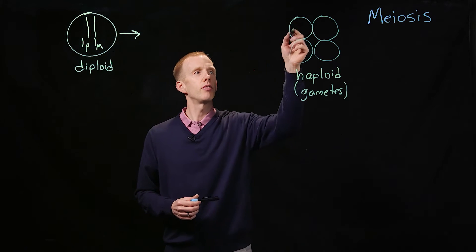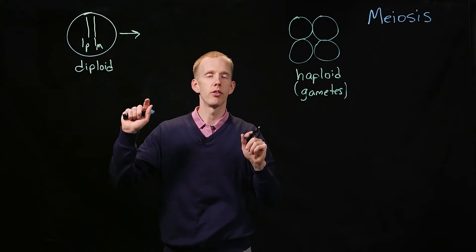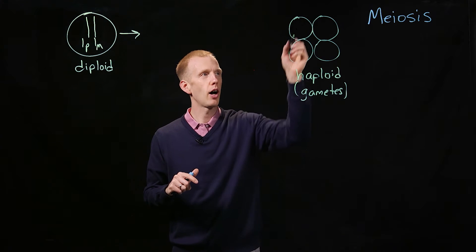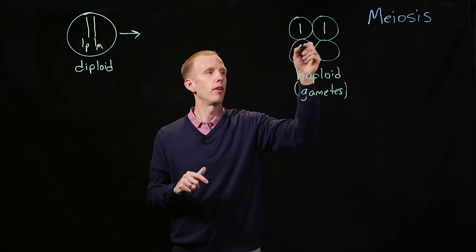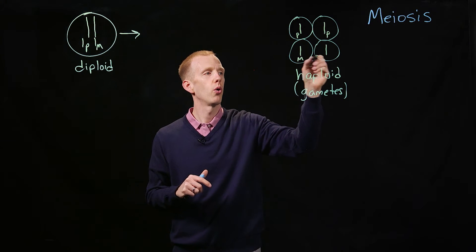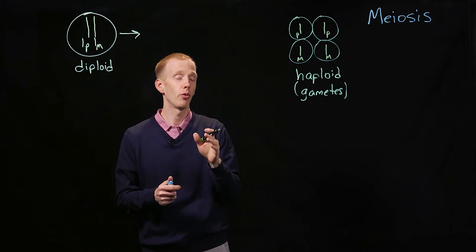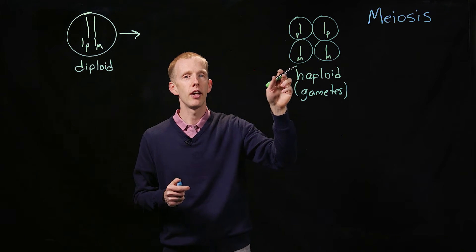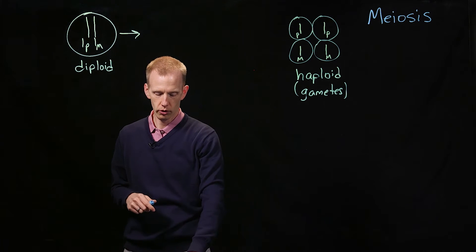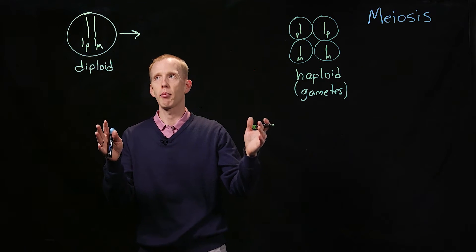And each of these gametes, then haploid, means that instead of having two copies of every chromosome, they will just have a single copy of every chromosome, so they'll either have the paternal version or the maternal version. There will always be one copy of the chromosome in each gamete, and only one or the other, paternal or maternal version, and meiosis is the pathway through which this happens.